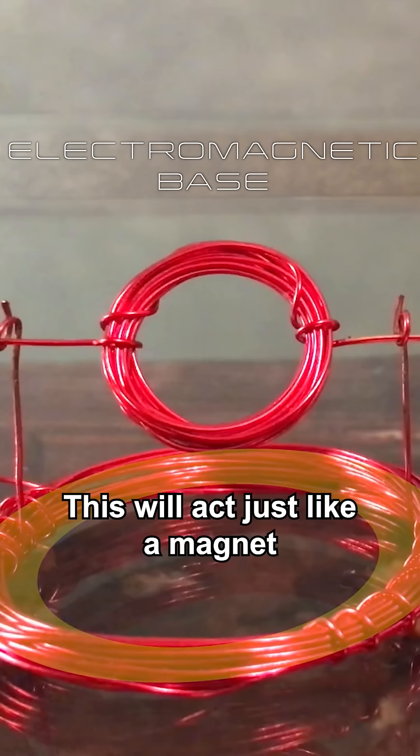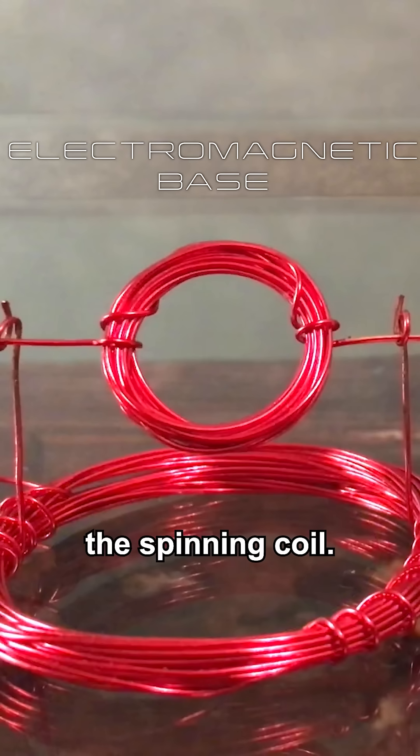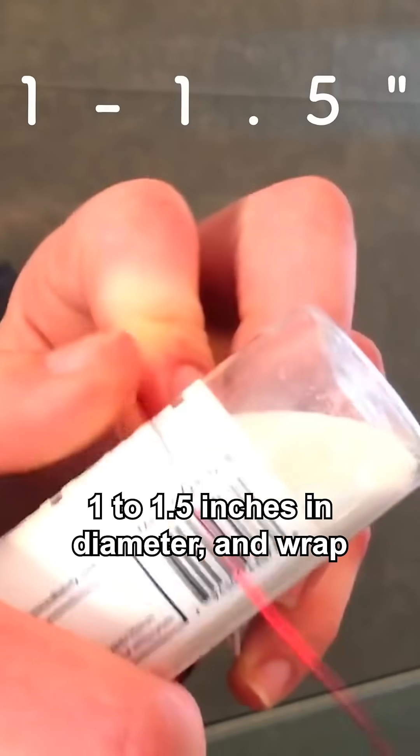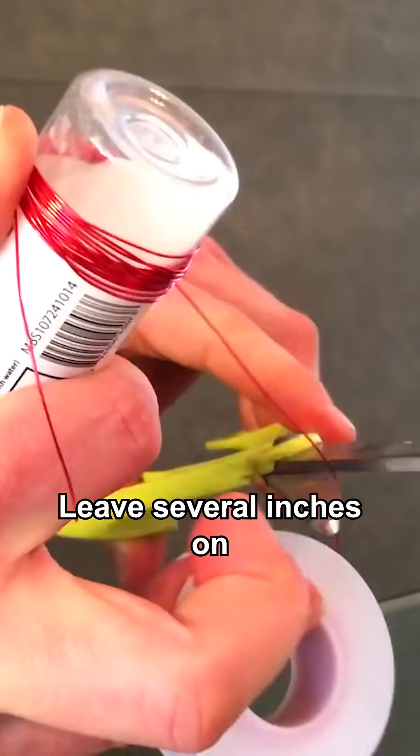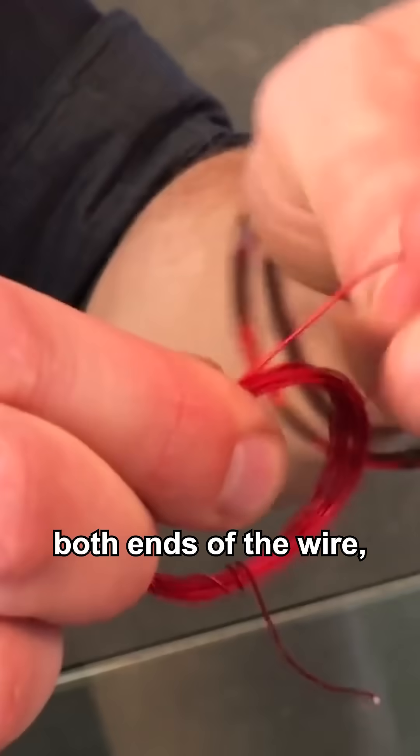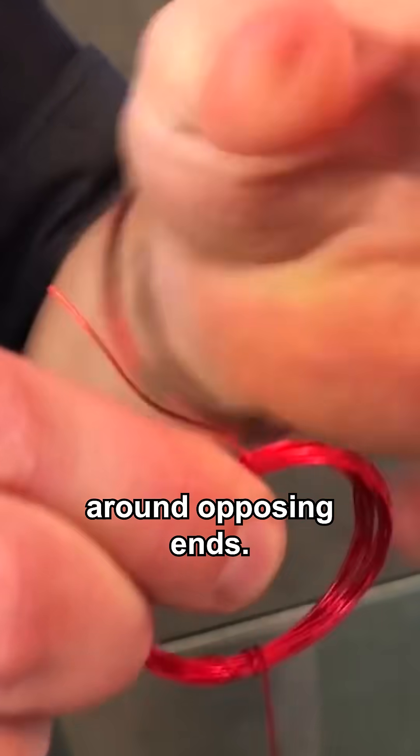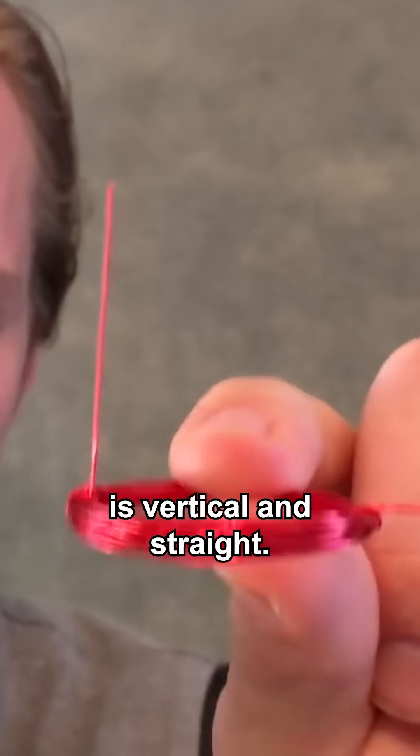Electromagnetic base. This will act just like a magnet when turned on, repelling the spinning coil. Take any round object 1 to 1.5 inches in diameter and wrap 15 turns of wire around it. Leave several inches on both ends of the wire. Secure two turns of wire around opposing ends. Make sure the support wire is vertical and straight.